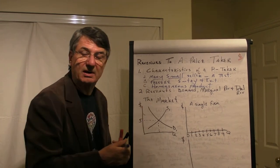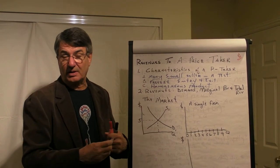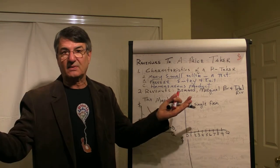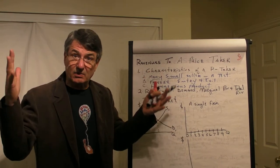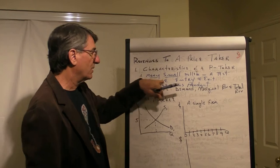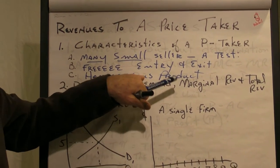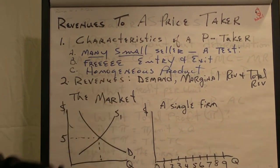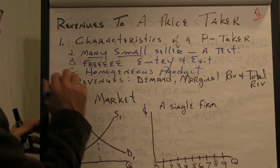Examples of price taker markets might be agricultural markets. There are thousands or hundreds of thousands of different sellers of wheat in the wheat market. There are no significant barriers to entry or exit and the wheat from one seller is exactly the same as the wheat from another seller. So those are the characteristics.